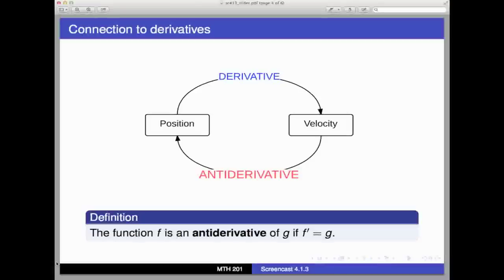If we're given a function g, then the function f is said to be an anti-derivative of g if f prime equals g. So f is a function whose derivative is the given function g. And this is our situation here. We're given velocity, which is the derivative of position, and we need to work backwards to find position. We'd say in this language that position is an anti-derivative for velocity, because taking the derivative of position gives velocity.